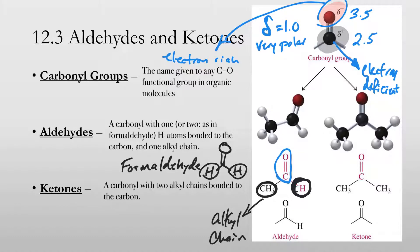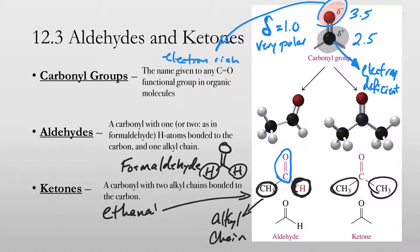Ketones are very similar, but they all have two alkyl chains. The example for the aldehyde is ethanal, also called acetaldehyde, which is actually what ethanol — the alcohol in beers and liquors — gets digested into. That is what's responsible for your hangovers. It's a carcinogen, hence why people can get liver cancer, and it occurs naturally in coffee, bread, and ripe fruit.